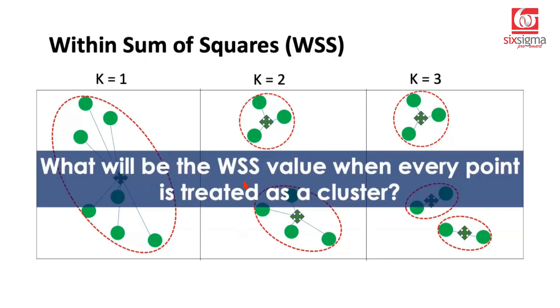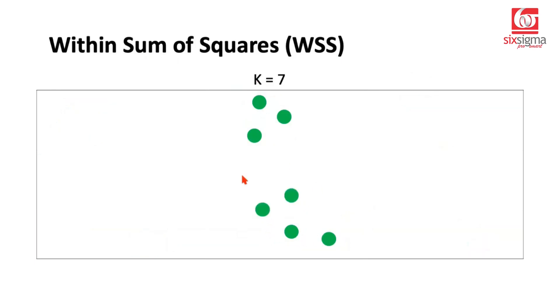In general, we can say if we increase the number of clusters, the within sum of squares value is going to reduce. Now comes a question: What will be the within sum of squares value when every point is treated as a cluster? If we say that every single point is a cluster in itself, we realize the centroid lies at the center of this point itself. All these distances have reduced to zero. Therefore, if you treat every single point as a cluster, then the within sum of squares value will reduce to zero.